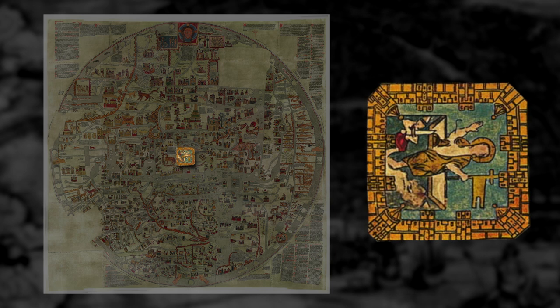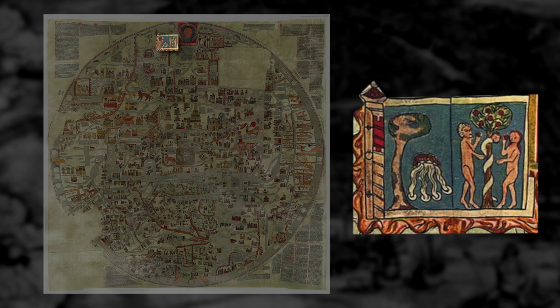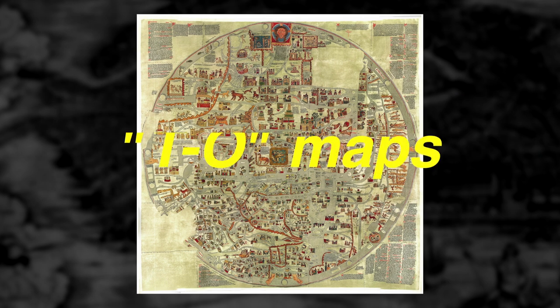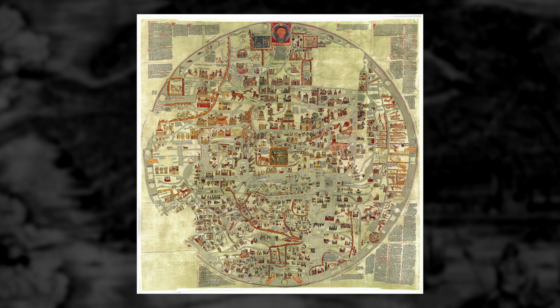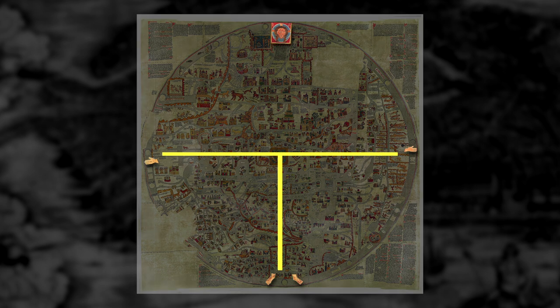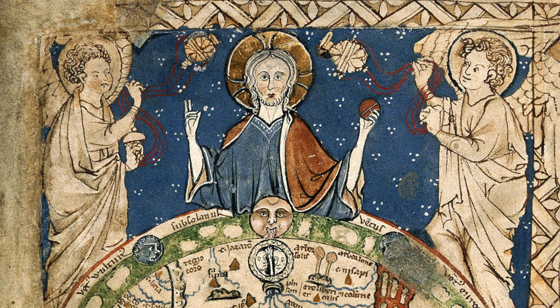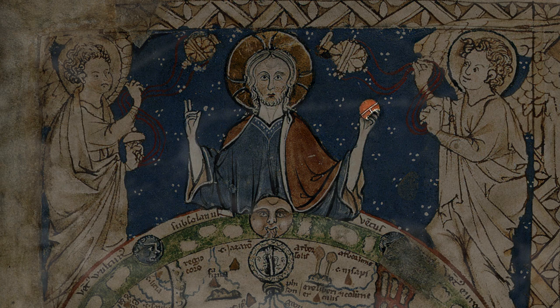These circular maps, divided into three landmasses, reflected a religious-based view of the world, as Jerusalem — the city of Jesus' death and resurrection — was located in the center, and the believed location of the Garden of Eden was located at the very top. These maps were also referred to as TO maps, because of the circular shape representing the world, and the shape of the letter T dividing the landmasses, which also represented the cross of Jesus' crucifixion. In Psalter's world map, Jesus is even depicted above the world, holding a TO globe in his hand.